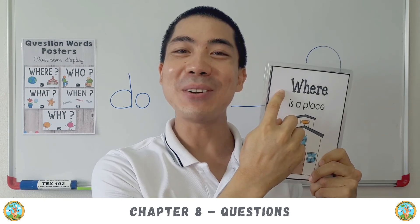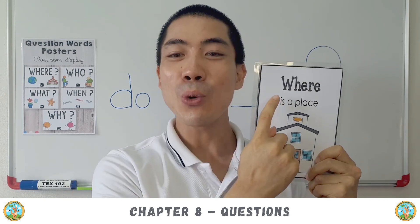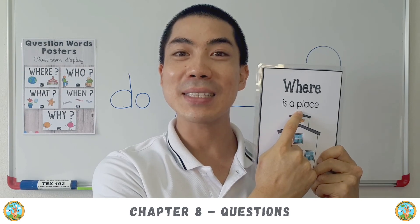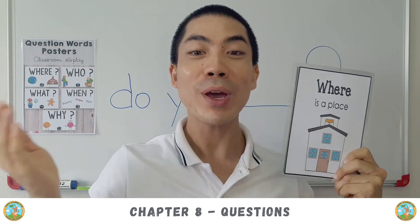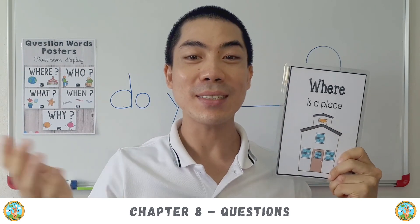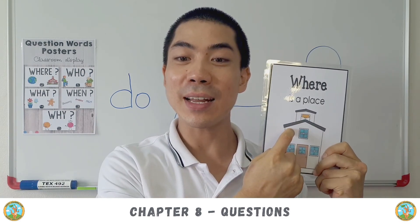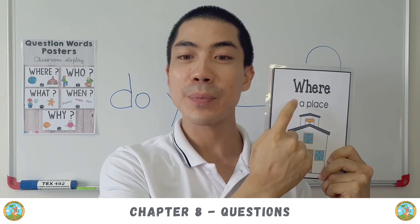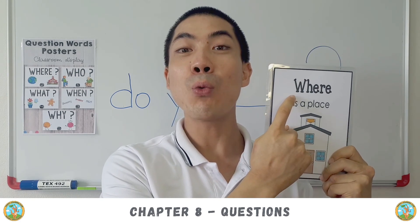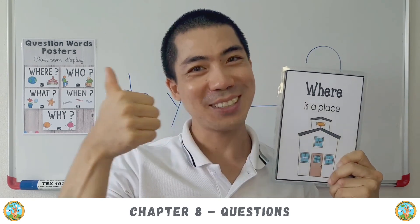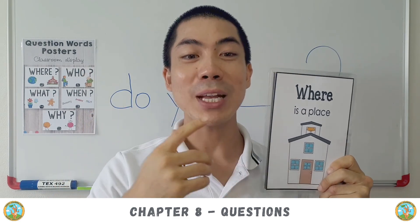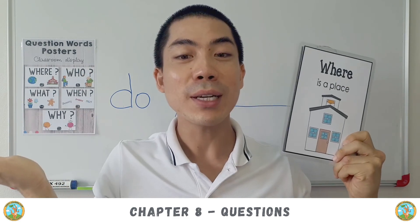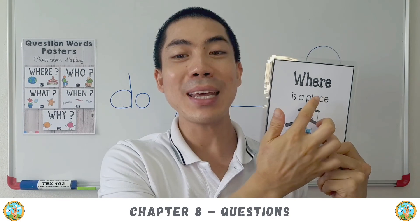Number two: where. Where is a place. Where is it? Where is that? This is a church. So, when someone asks where, where is a place.